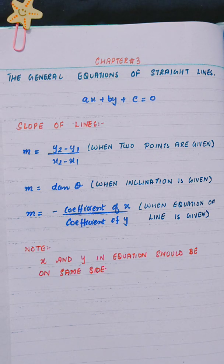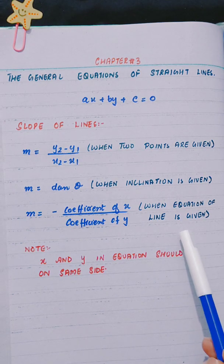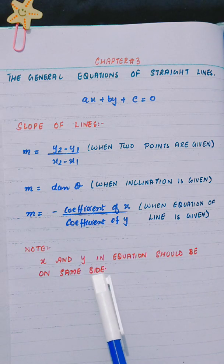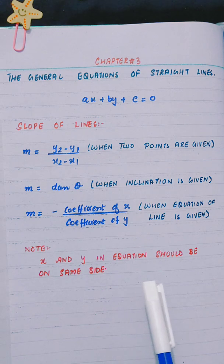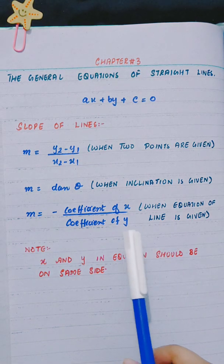And when the equation of the line is given, we use m equals minus coefficient of x divided by coefficient of y. For this formula, the rule is that x and y should both be on one side. If they are on opposite sides, you have to shift the values to one side, then apply this formula.